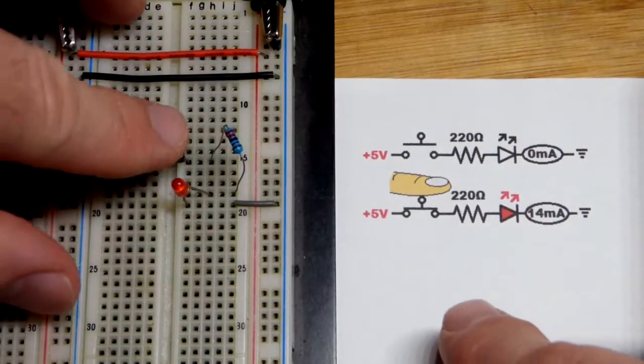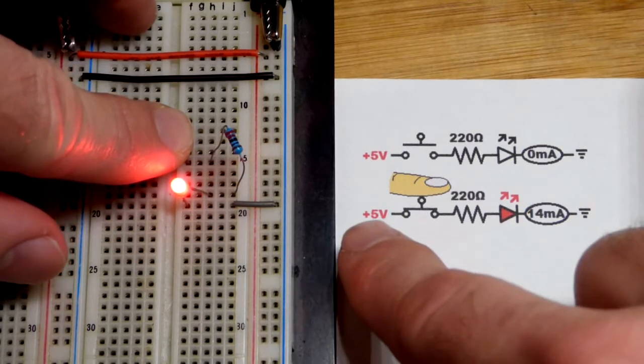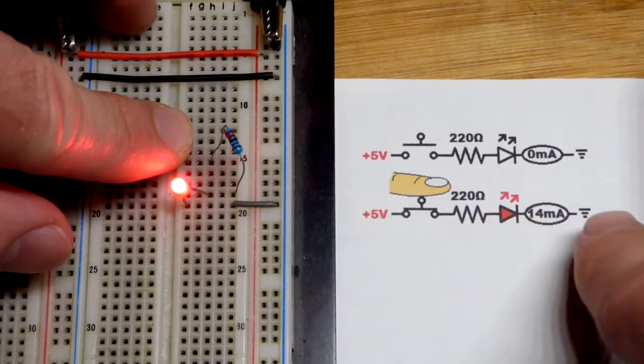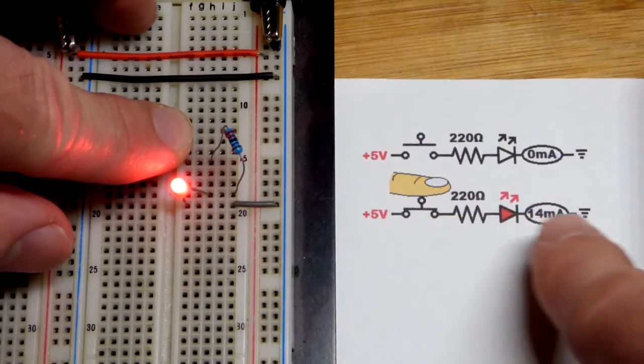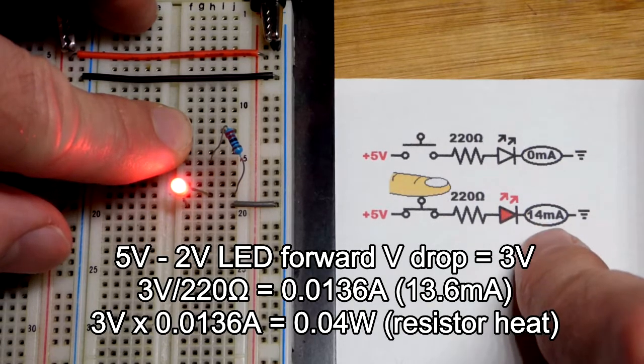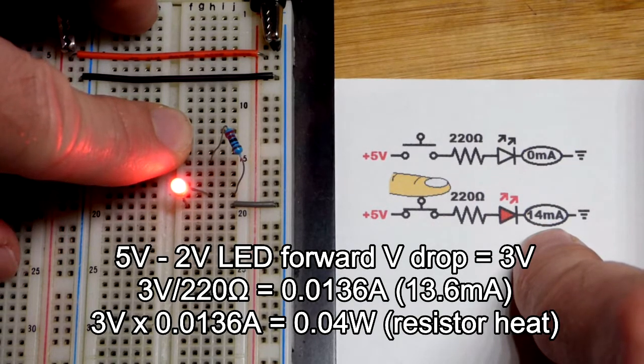When we close the switch right there you see the LED comes on because we now have a current path for the power supply. So the current is the same throughout. It's going to be about 14 milliamps of current, a little bit less probably.